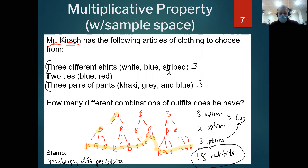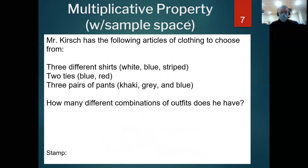If you can't believe me, you can actually start listing those off — WBK, WBG, WBB, and so on down the line. But that's how I would quickly create a sample space or a total number of combinations from several things.